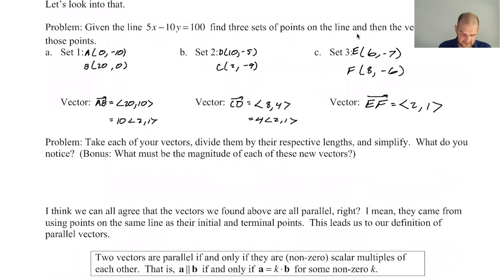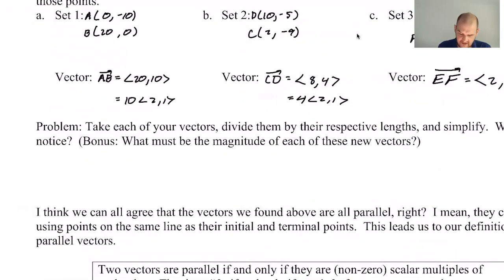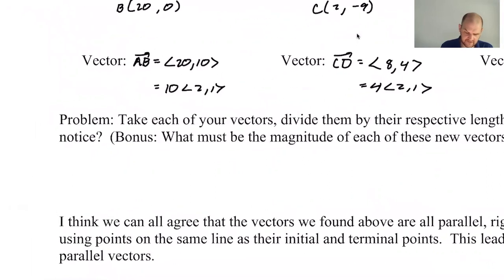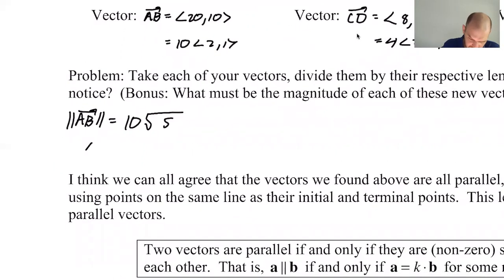What this says to do is take each of the vectors, divide them by their respective lengths, and simplify. So the magnitude of AB is going to be 10 times the magnitude of the vector <2,1>. This is one of those properties of scalar multiplication. So this is 10 times the magnitude of <2,1>, which is 2 squared plus 1, so 10 root 5.